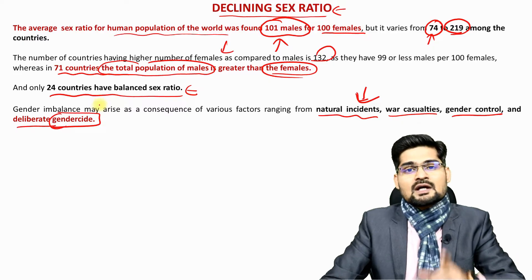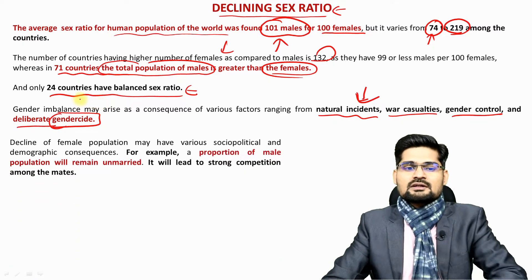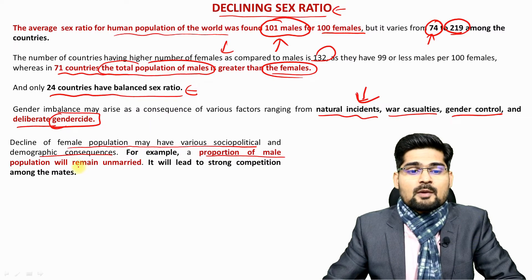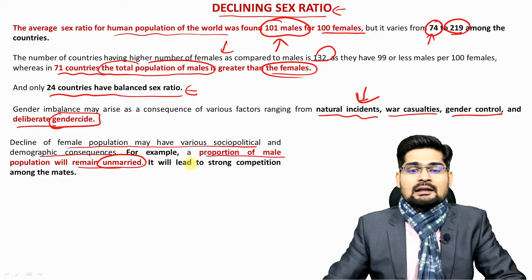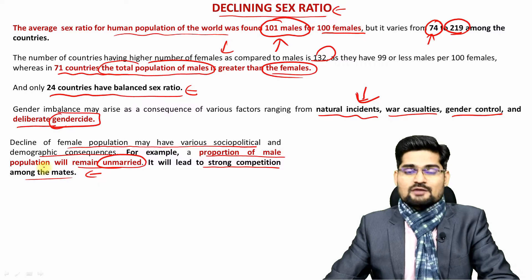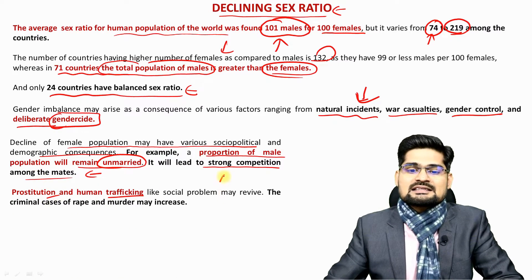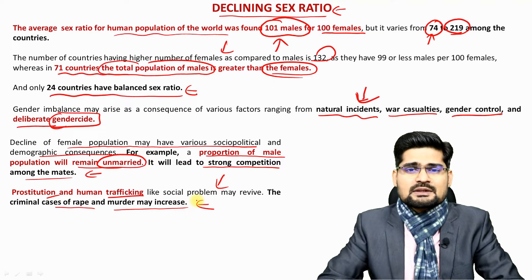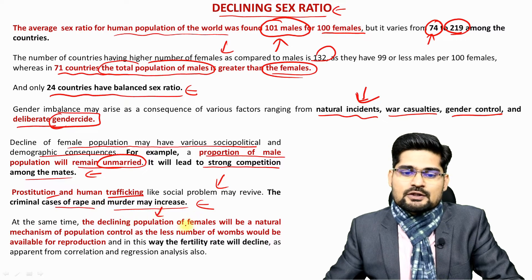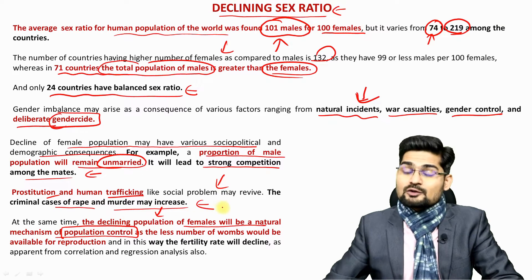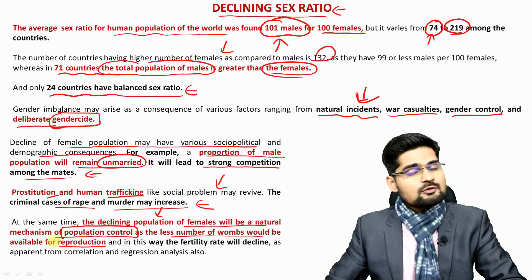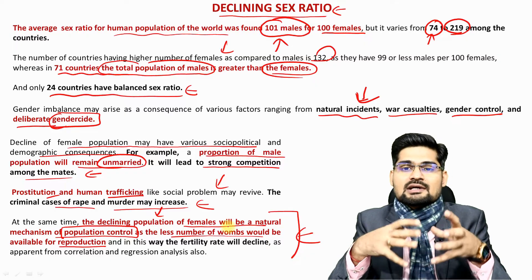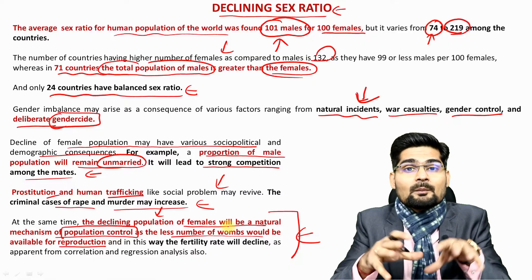Decline of the female population may have various socio-political and demographic consequences. A proportion of the male population will remain unmarried, and in the long run there will be strong competition among mates. The fallout includes prostitution, human trafficking, and several other social problems. Criminal cases of rape and murder may increase, and there are several other possibilities of crime against women. At the same time, the declining population of females will be a natural mechanism for population control, as fewer wombs would be available for reproduction. Declining sex ratio would lead to a sharp transition of population in particular areas of the world.